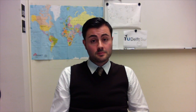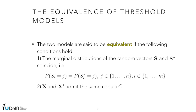On the course platform you will find extra materials with some extra examples. Let x, d and x star, d star be two threshold models with state vectors s and s star. We say they are equivalent if the marginals of s and s star coincide and if x and x star admit the same copula C.